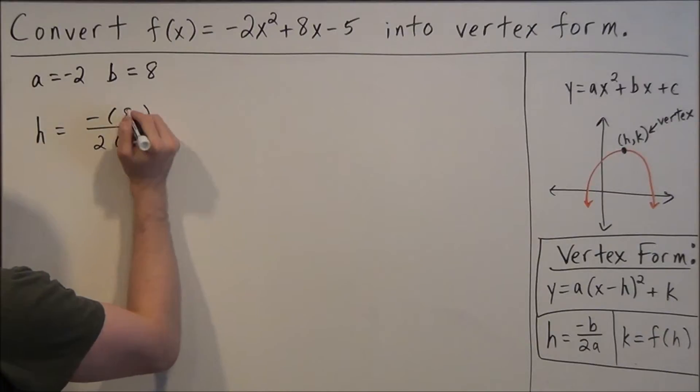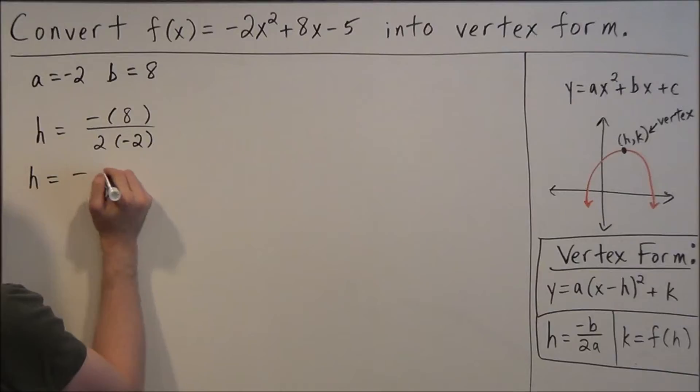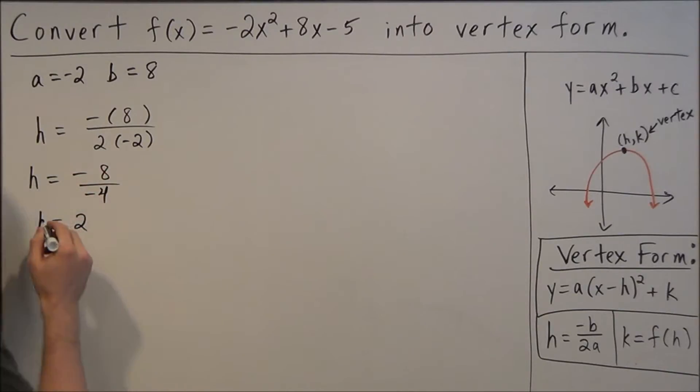So if we plug in b is equal to 8, a is equal to negative 2, this gives us h is negative 8 over negative 4 which tells us h is equal to 2.